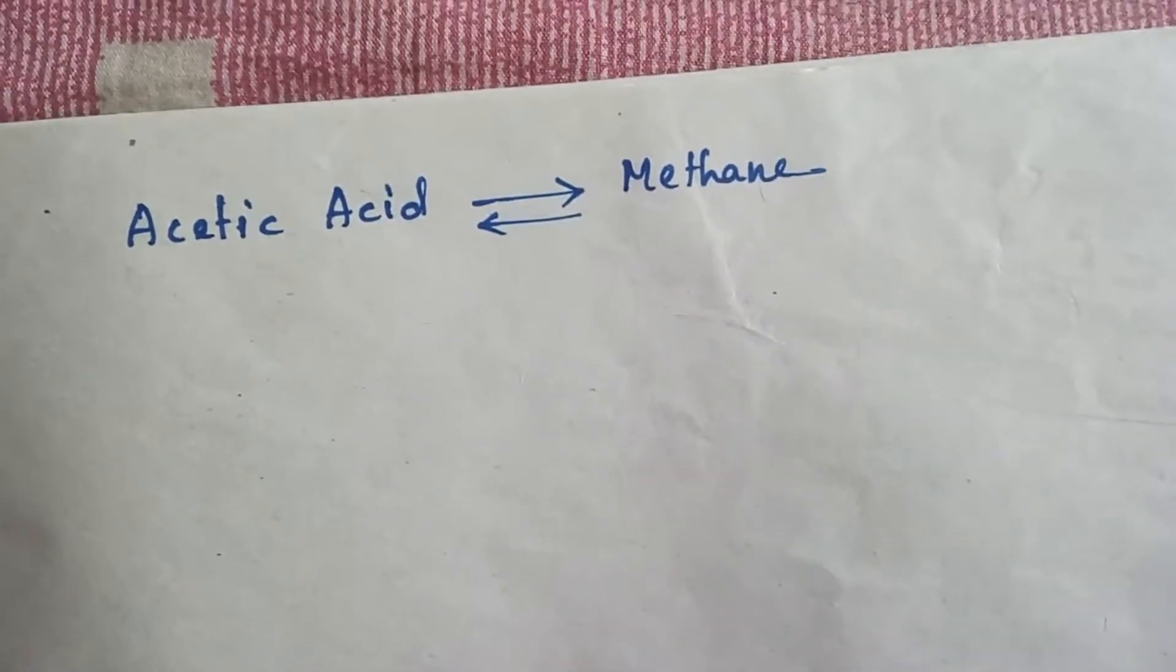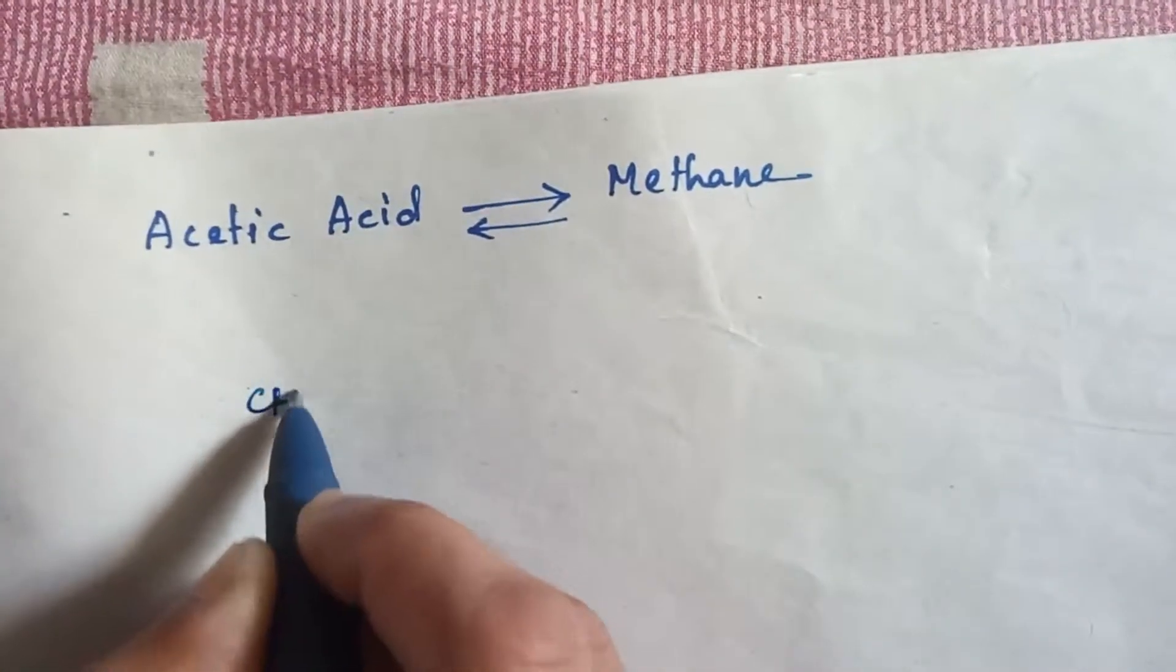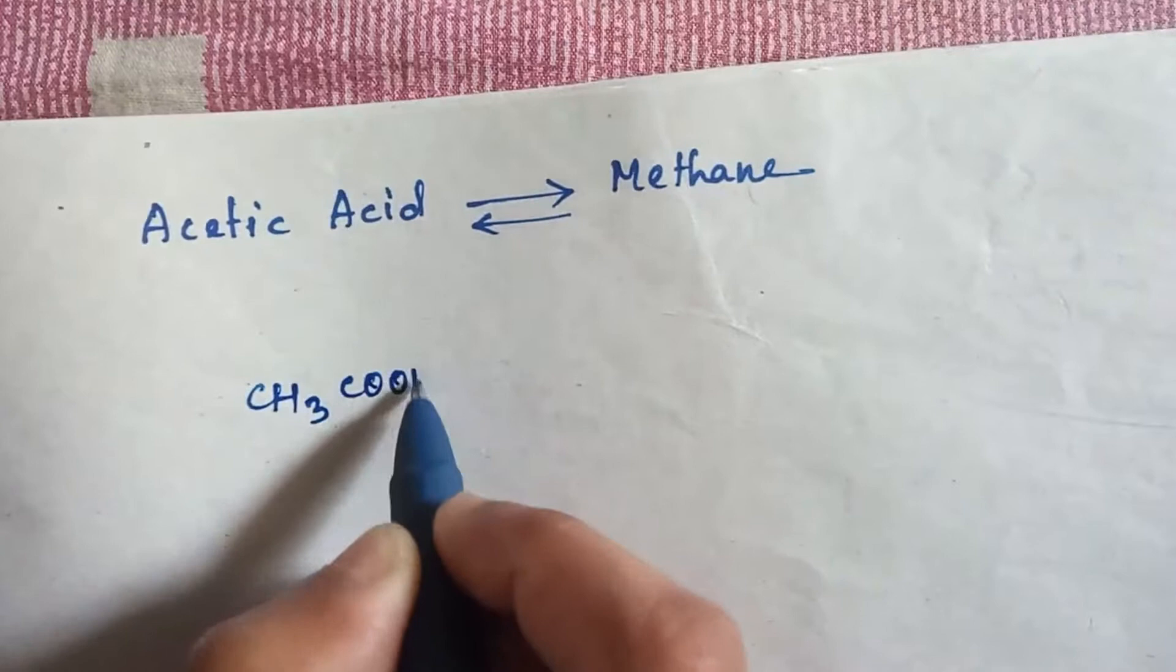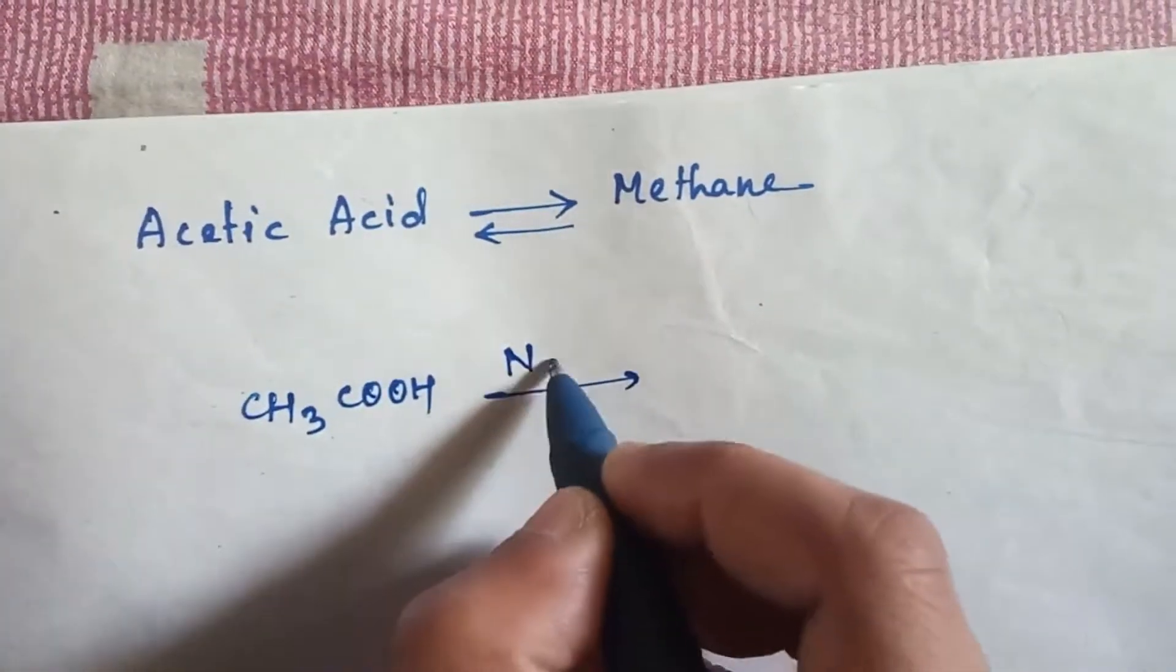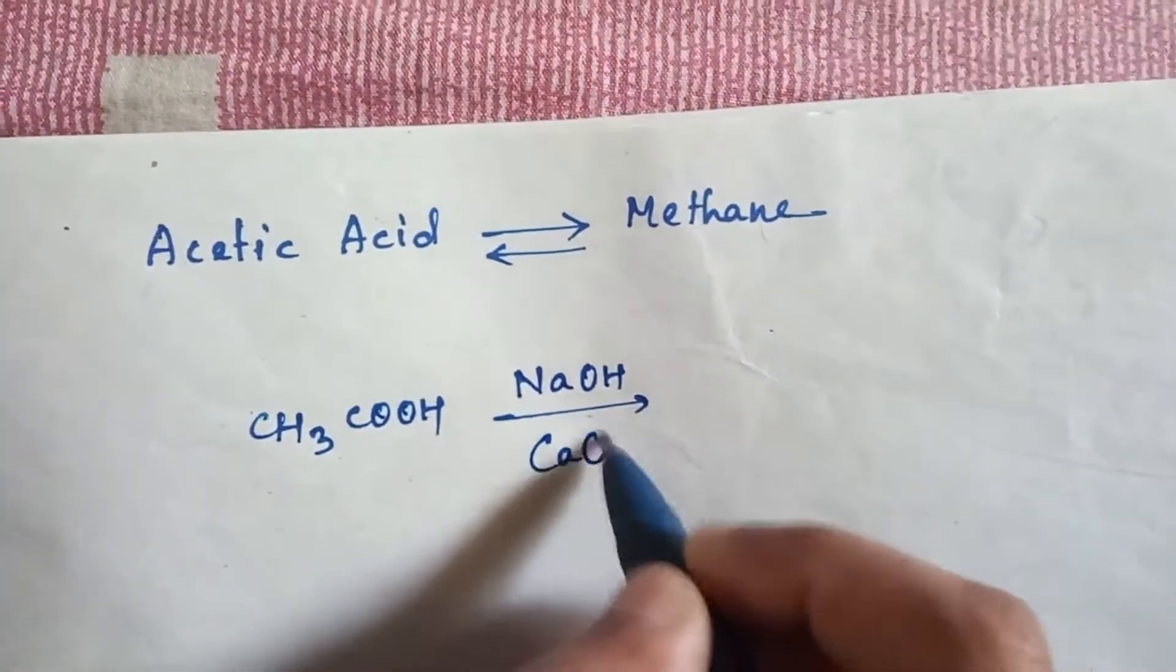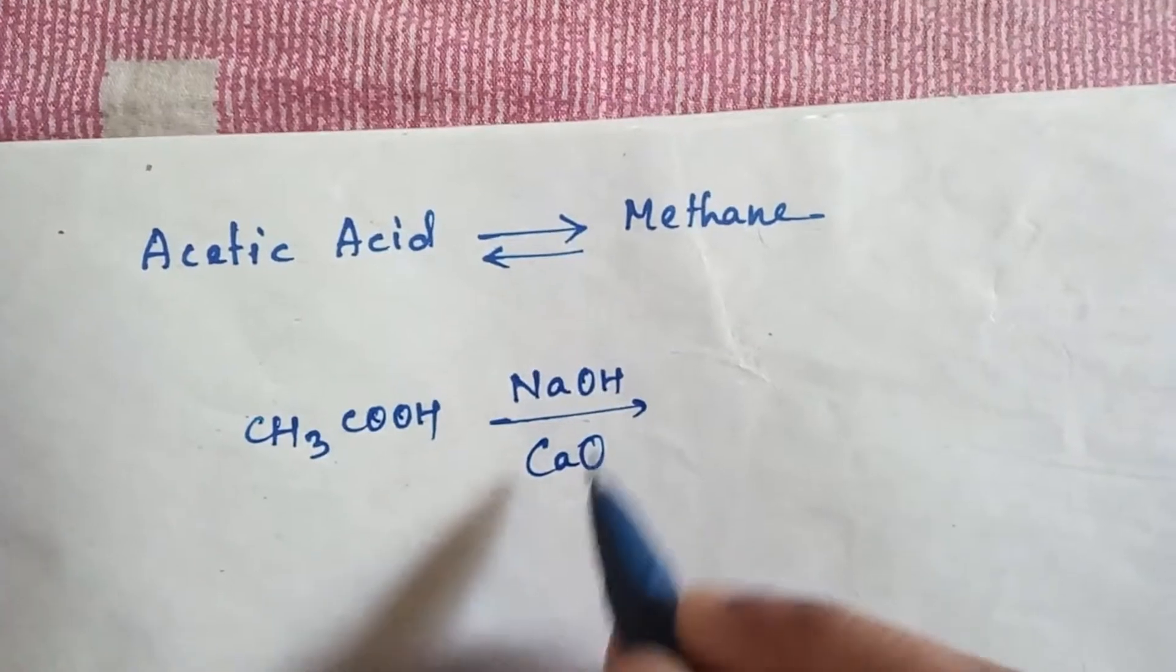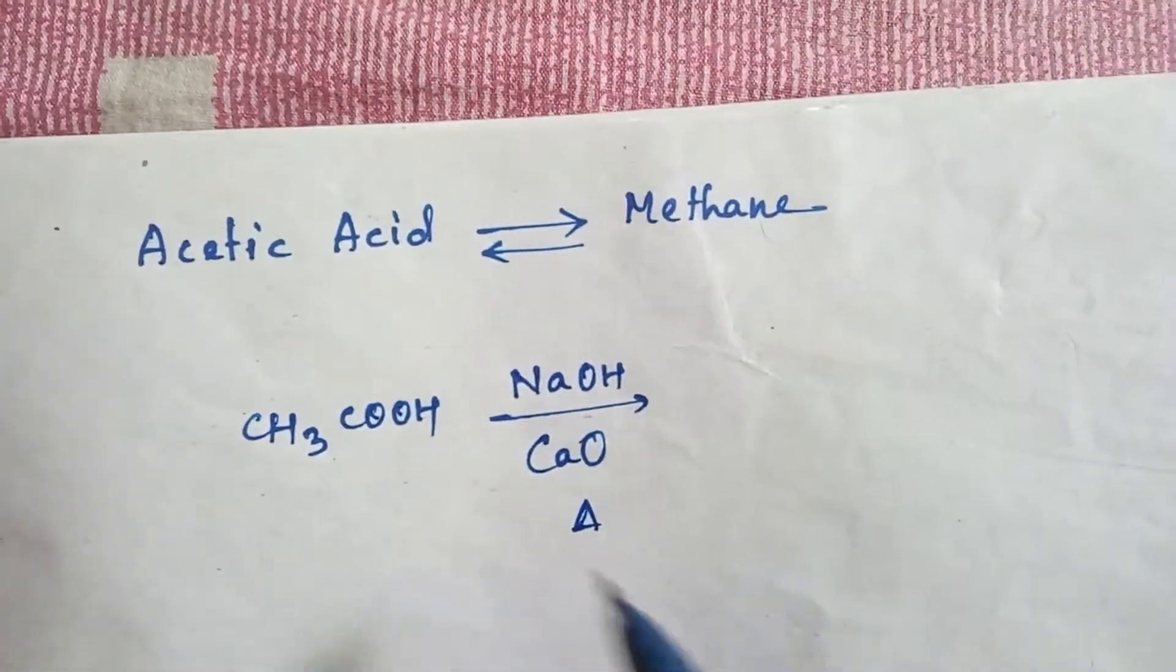Let's get started. First, let's write the formula of acetic acid: CH3COOH. Now, in acetic acid, if you add sodium hydroxide and calcium oxide together, it forms soda lime.